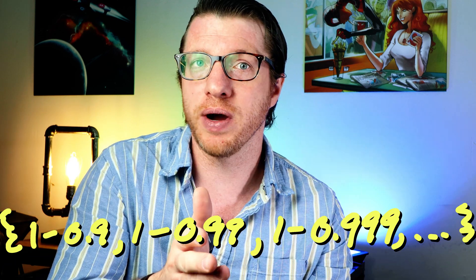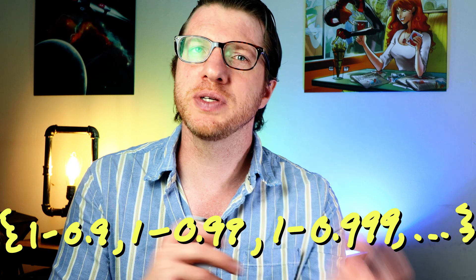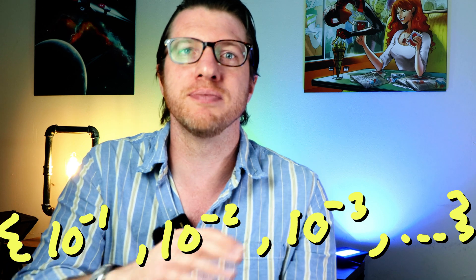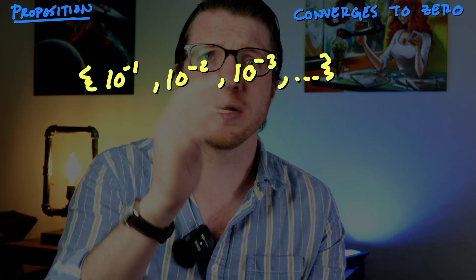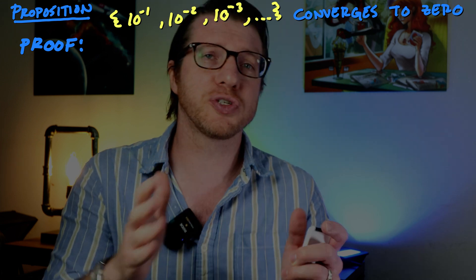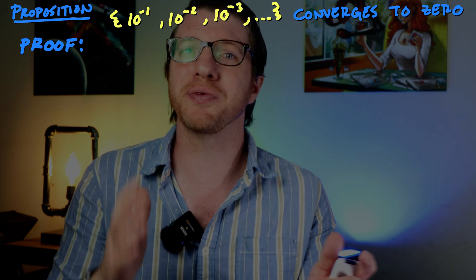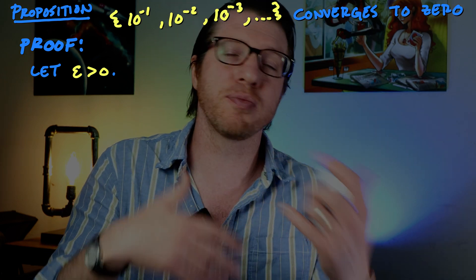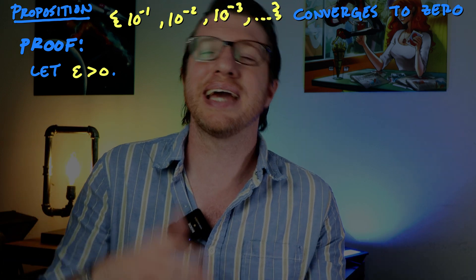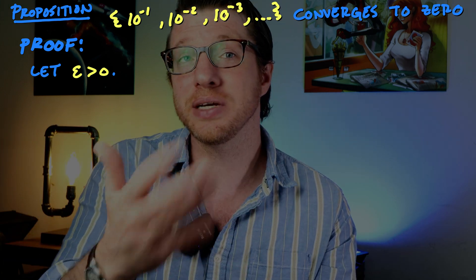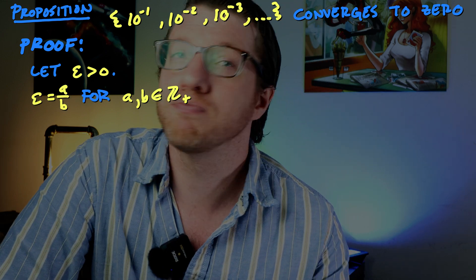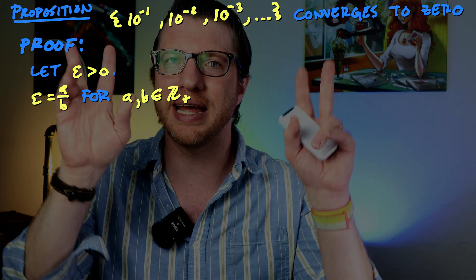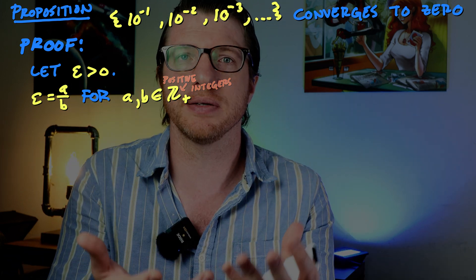For example, take the sequence 0.9, 0.99, 0.999, etc. We can show that the difference between this sequence and 1 goes to zero — the differences are 0.1, 0.01, 0.001, etc. The proof starts, as almost every introductory real analysis proof does, by declaring epsilon greater than zero. The goal is to take some quantity and squeeze it underneath epsilon, showing the sequence converges to zero.